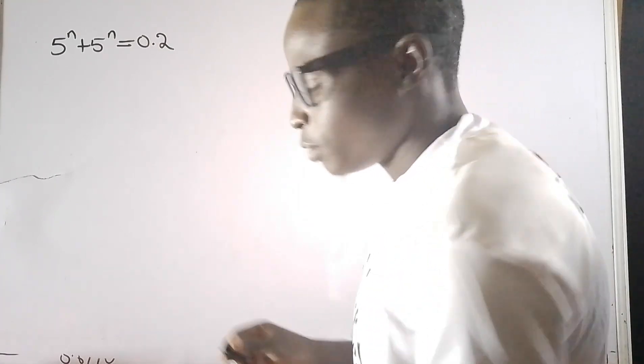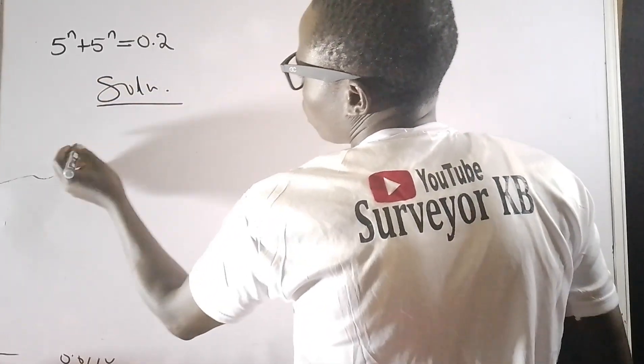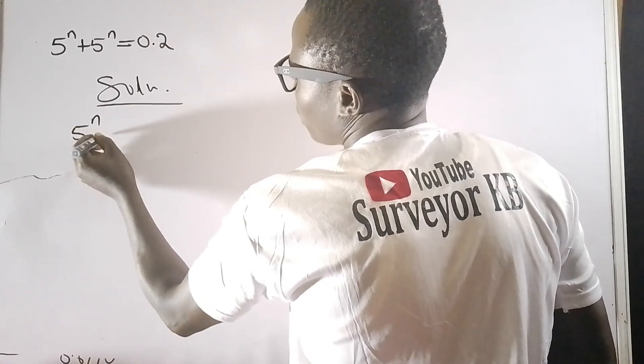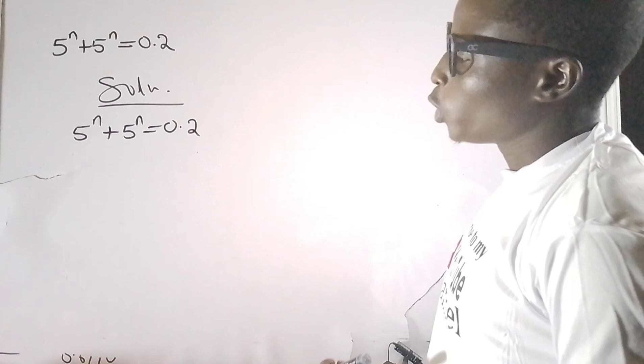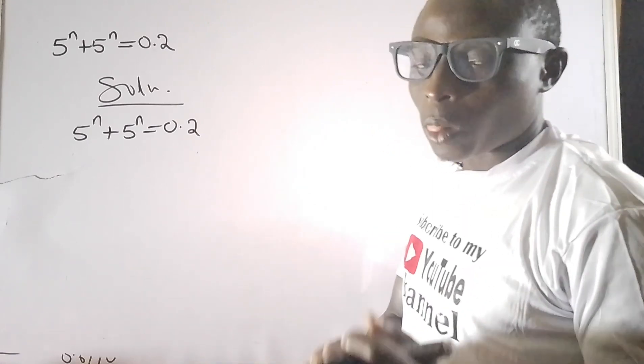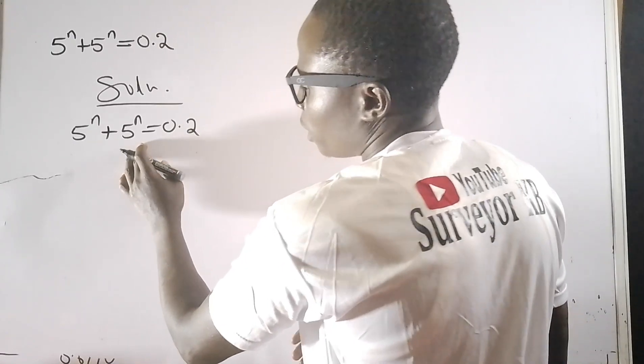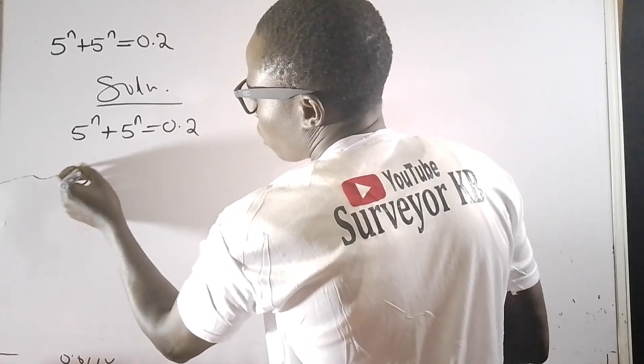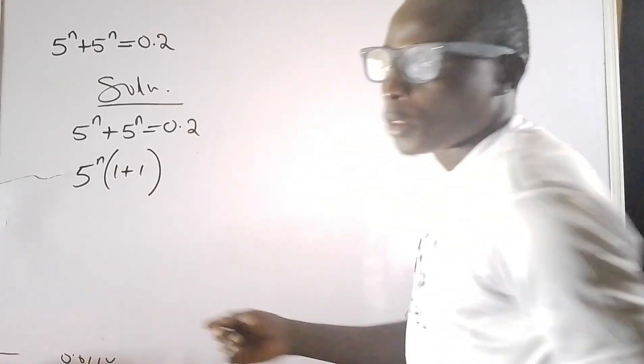Thank you so much. Let's find a solution to this radical equation. To solve this radical equation, first we have to consider the left hand side. We have 5^n and 5^n, which means I can factor 5^n out: open bracket (1 + 1), because by the time you open this bracket you are going to get 5^n + 5^n.